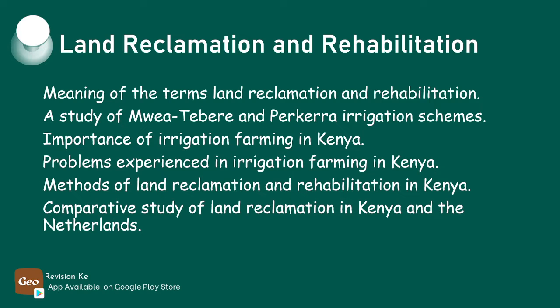After defining the two, we are going to cover the factors that influence the location of selected irrigation schemes in Kenya, the significance of these schemes, and the problems experienced in carrying out irrigation farming in Kenya. We are also going to look at a study of Mwatebere and Pekera irrigation schemes, describe the methods used in land reclamation and rehabilitation in Kenya, and finally compare the methods of land reclamation in Kenya and in the Netherlands.